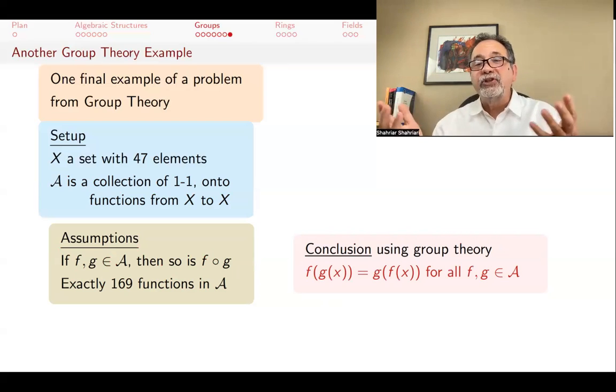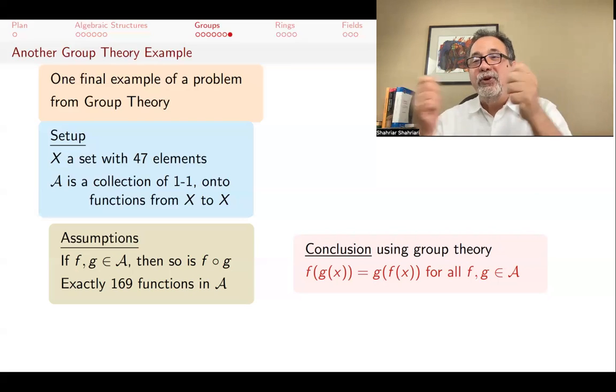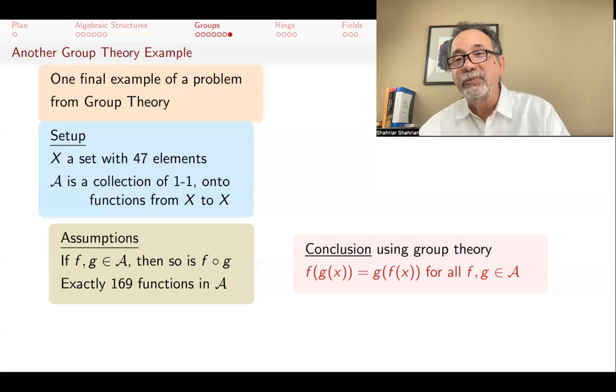If I give you just a random set of functions, this is not going to happen, that it doesn't matter which way you compose them. But if you have 169 bijections with the property that if you compose any two of them, the result is also in your collection, then it has to have this commutative property. I urge you to try to prove this. We will prove this not that far in the future in this set of lectures, but it's surprising that that can be done.